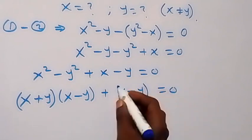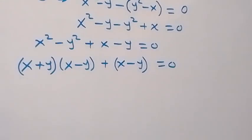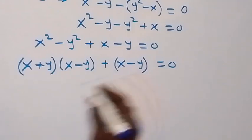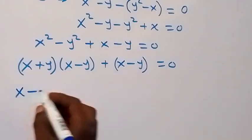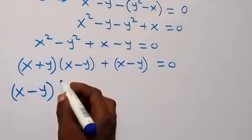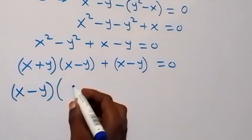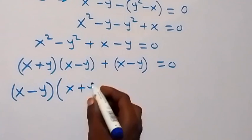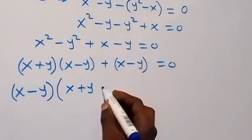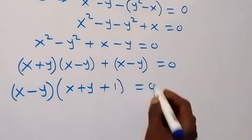We can put this in brackets and factor x minus y out. So we have x minus y times, and in the bracket what is left: x plus y, then what is left here will be 1, that's plus 1, which is equal to 0.